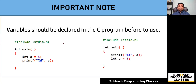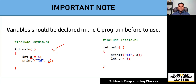There is a very important note that every beginner must definitely understand. Variables should be declared in the C program before their use. It means whenever you are creating a variable, it has to be created before it is actually used. In the first example, as you can see, I have created variable 'A' before it is used in the printf, so this is valid — this is the valid way of declaring your variable in C language.